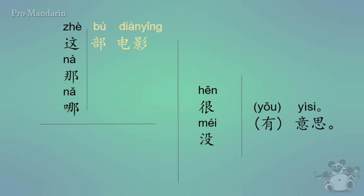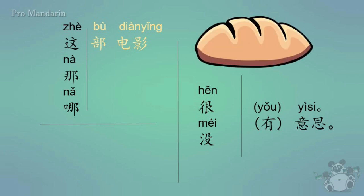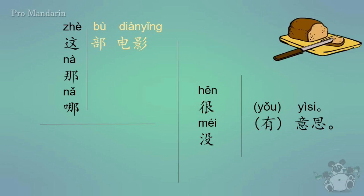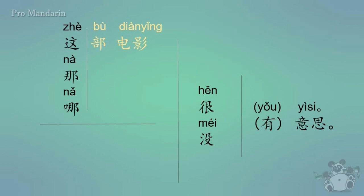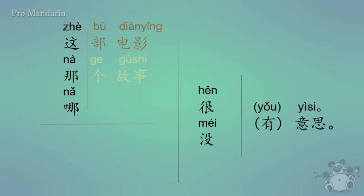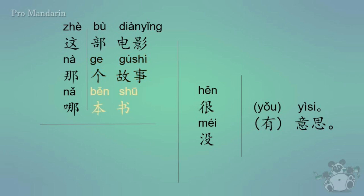The next word is diànyǐng. To the left of it, you'll notice the character bù — that's a classifier. I explain classifiers in more depth in my other videos, but for the sake of this video, I'll just give you one example of how classifiers work. In English, if I say 'give me bread', you'd be a little confused. But if I say 'give me a slice of bread' or 'a loaf of bread', now you know exactly what I mean. In Chinese, all nouns have classifiers. I'll show you the default classifier you can use for any noun if you don't know the correct one. This next word is gùshi, which means 'story'. The classifier for it is gè. And the last one: shū means 'book', and bù is the classifier for it.